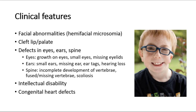Those with Goldenhar Syndrome may also present with cleft lip or cleft palate. Other characteristics include defects in the eyes, ears, and spine. For the eyes, they may have growths on their eyes or small eyes, as shown in this child in the picture — the left eye is smaller compared to the right eye. They may also have missing eyelids.